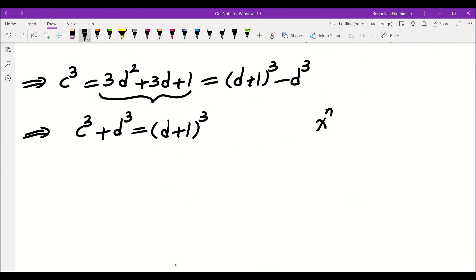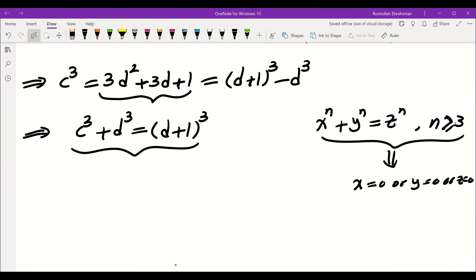So that's really nice because by Fermat's last theorem, I know if I have x to the power of n plus y to the power of n is equal to z to the power of n, and n is at least 3 and x and y and z are integers, from here I can deduce that x is 0 or y is 0 or z is 0. So from here, I can deduce that either c is 0 or d is 0 or d plus 1 is 0.